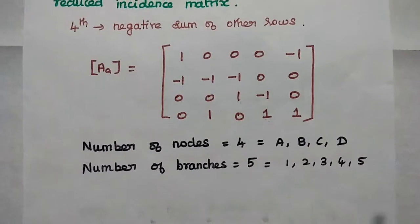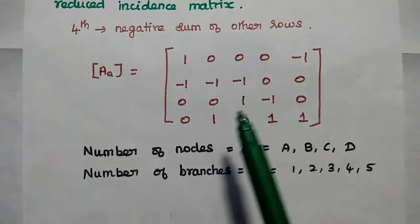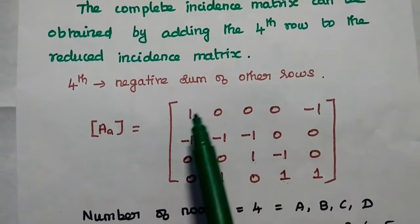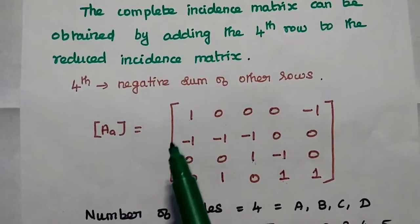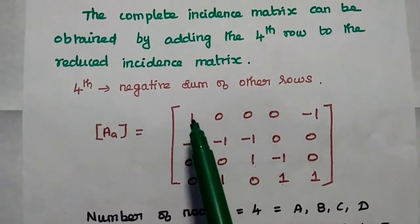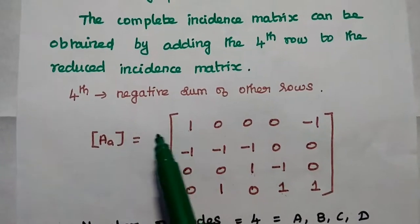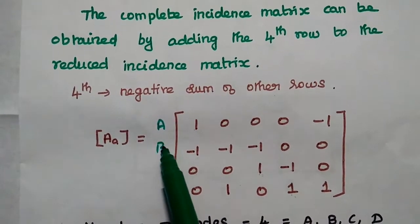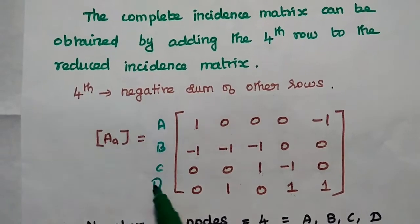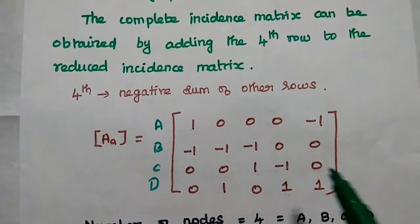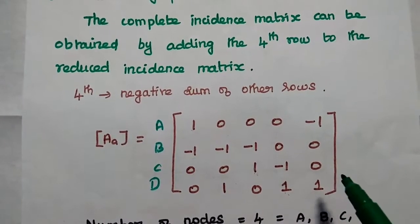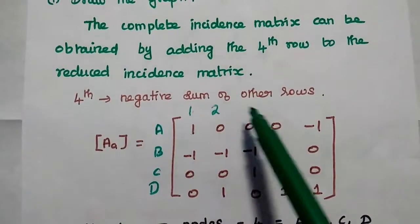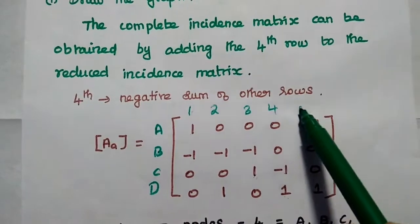This is the complete incidence matrix for the given reduced incidence matrix. The row represents the node — there are 4 rows, meaning 4 nodes. We can name the nodes as A, B, C, D. There are 5 columns, and the column represents the branch. We can name the branches 1, 2, 3, 4, 5.